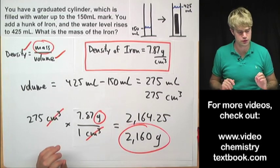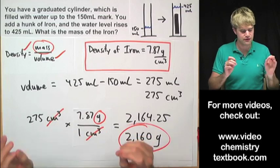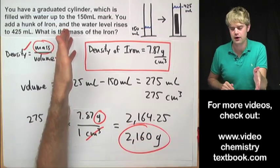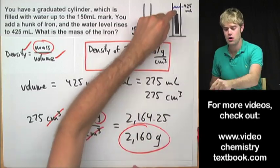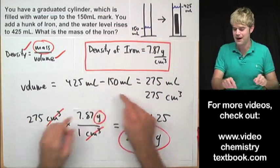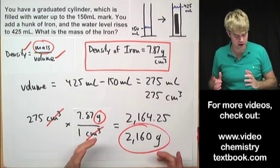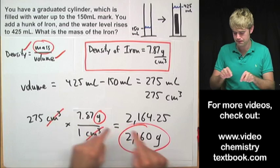Just to review this really quickly, we needed the density of iron, we got that from the internet, that was easy and to figure out the volume of this piece of iron we had to look at how much the water level rose when we added the iron to the graduated cylinder and from that we could figure out the volume of the iron then we used density as a conversion factor to go from volume to mass.